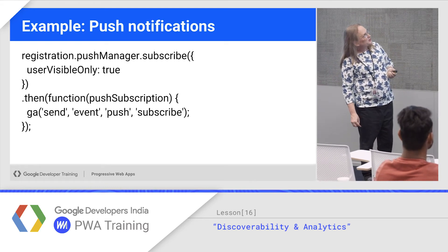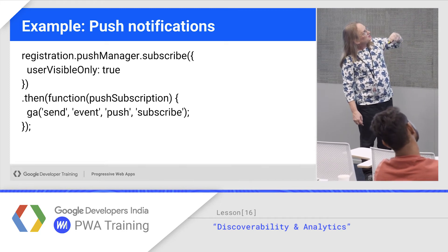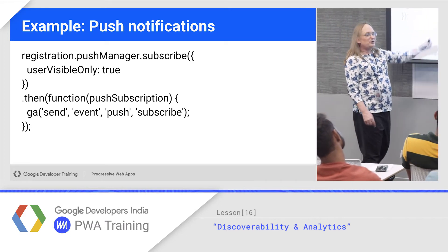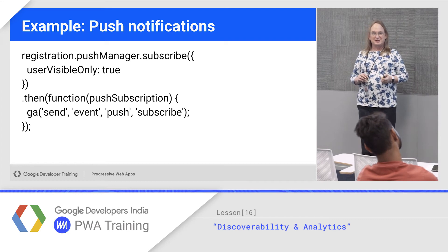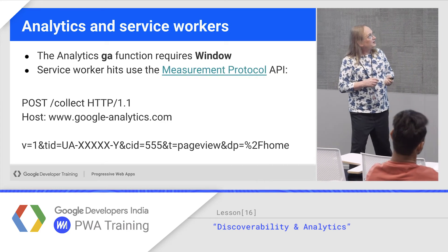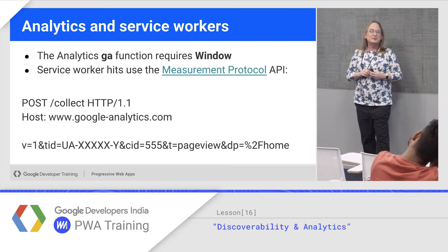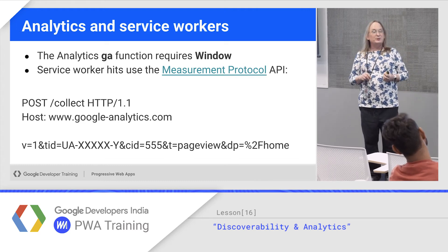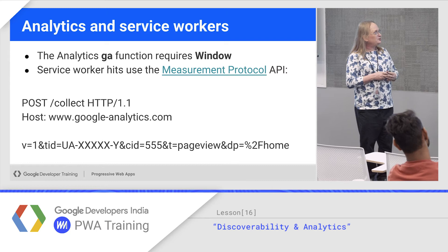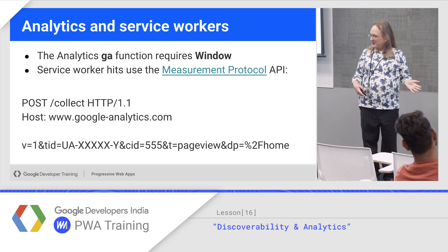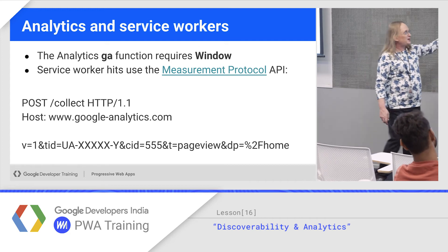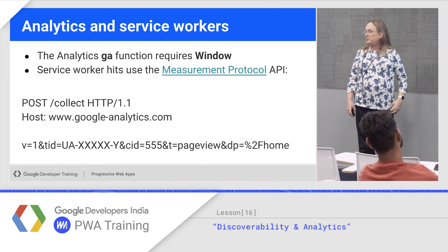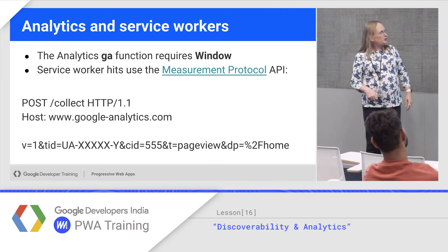Here's the example in push notifications: we subscribe to the push manager, and then whenever we get the subscription, we go ahead and send a note that says this user registered for push messages. Now there's a bit of a problem when you do this with service workers — the GA library requires the use of window. So instead you ditch the library if you don't have window, which you don't have inside a worker, and instead send the appropriate HTTP-formatted messages. That's documented as the Measurement Protocol API — there's a doc page at Google.